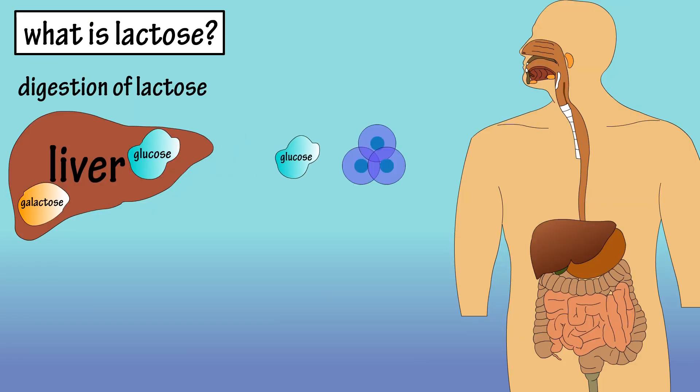The liver will send the glucose to cells to use as energy, store it as glycogen, or store it as fat. Galactose is converted to glucose and then follows the same pathway as just mentioned.